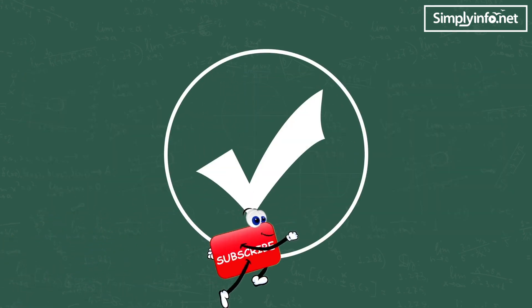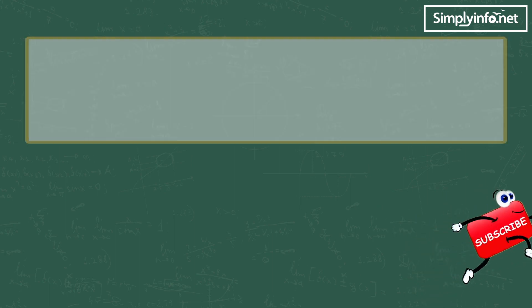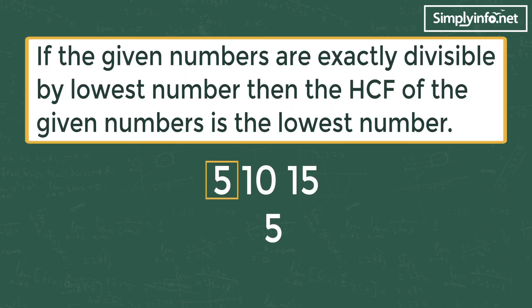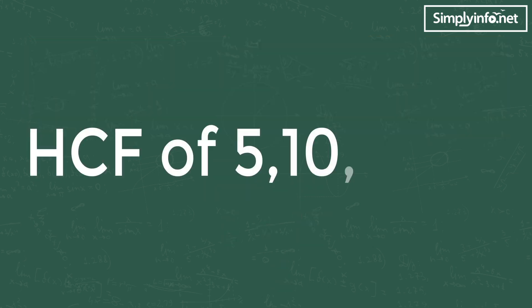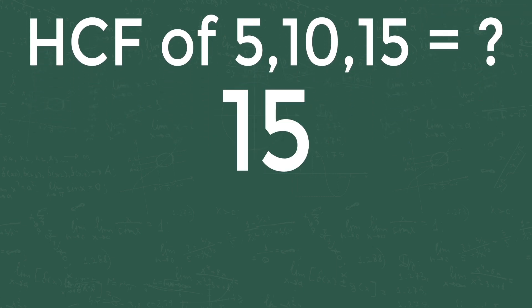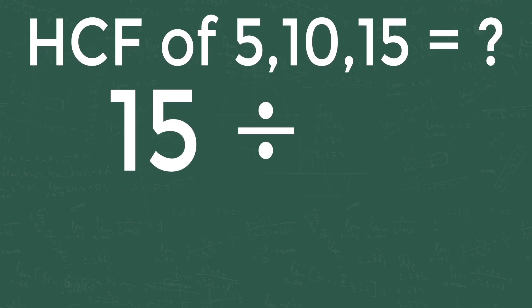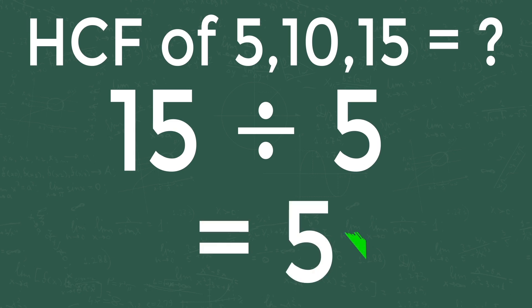The answer is yes if you know this trick. Trick 1: if the given numbers are exactly divisible by the lowest number, then the HCF of the given numbers is the lowest number. Let's solve the first problem: HCF of 5, 10, and 15. The numbers 5, 10, and 15 are exactly divisible by the lowest number 5, so the HCF is 5.